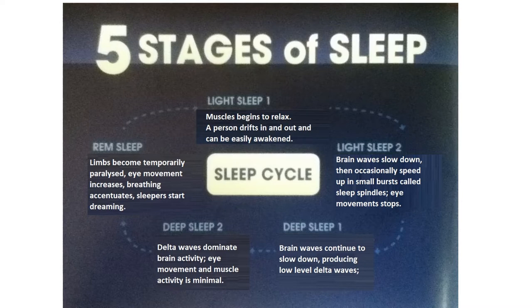Deep sleep, stage three. Stages three and four are both deep sleep stages. Brain waves continue to slow down, producing low-level delta waves, with delta waves dominating brain activity. Eye movements and muscle activity are minimal.